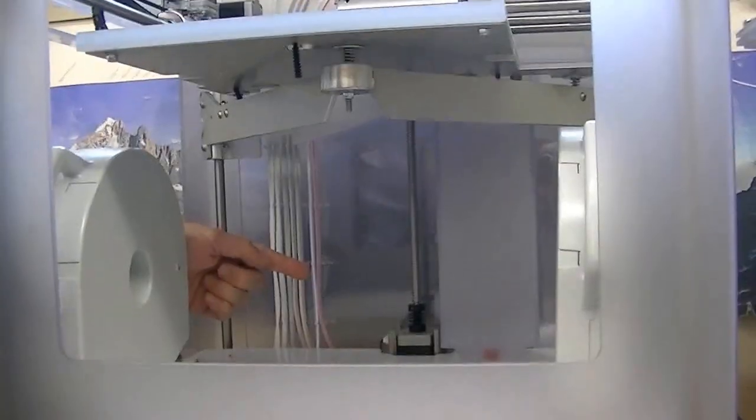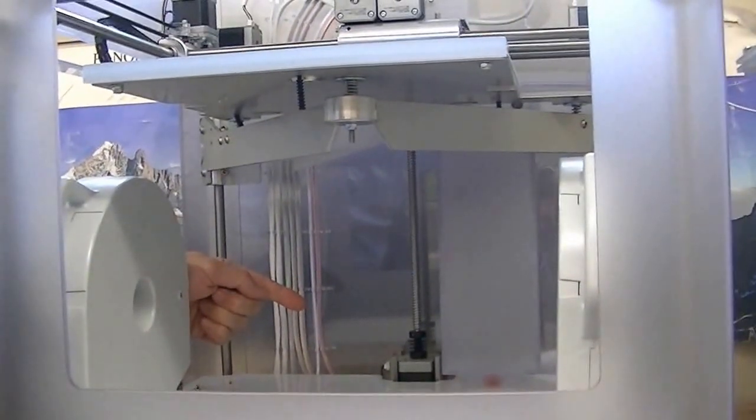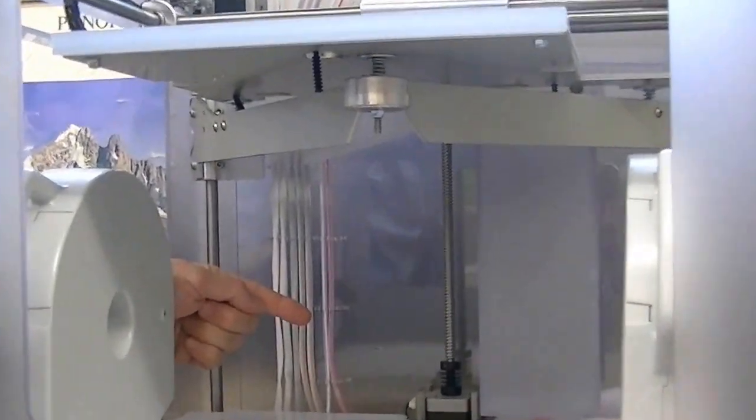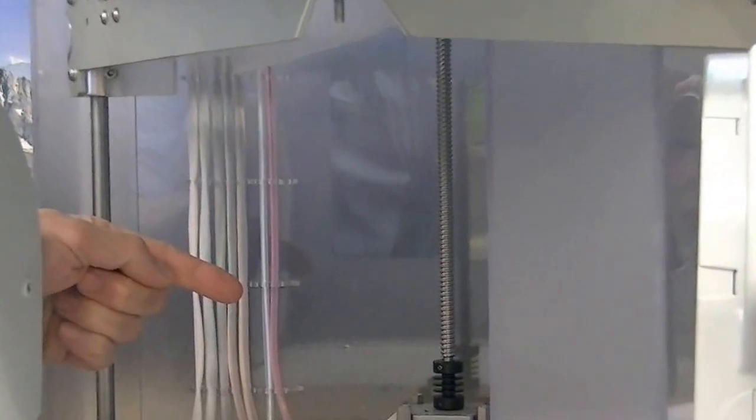In the printer, we have another stepper motor connected to a lead screw, which controls the movement of the print platform, thus rendering a Z-axis.